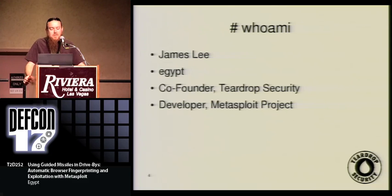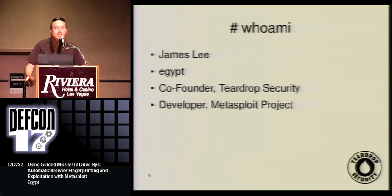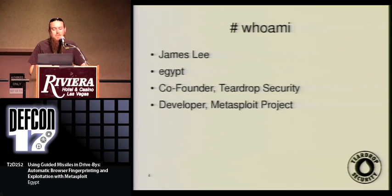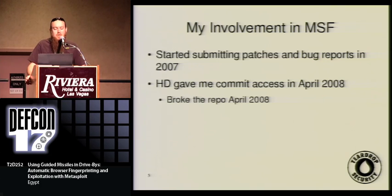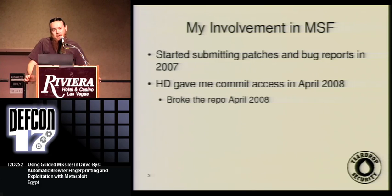I'm James Lee, also known as Egypt. I'm co-founder of Teardrop Security, which is a consulting company focused on penetration testing and forensics analysis. I'm also a developer for the Metasploit project and a member of Attack Research. I started submitting patches and bug reports to Metasploit in 2007. HD thought my stuff didn't suck that much, so he put some of it in, and eventually gave me commit access in 2008, when I promptly broke the repository. I think I've gotten better, but no guarantees.